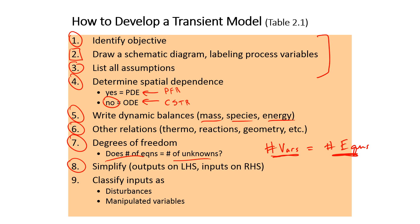If you have too few variables, it's over-specified. The equations need to be solved to find those variables. Finally we want to simplify and then also classify other inputs as disturbances or manipulated variables for our system.